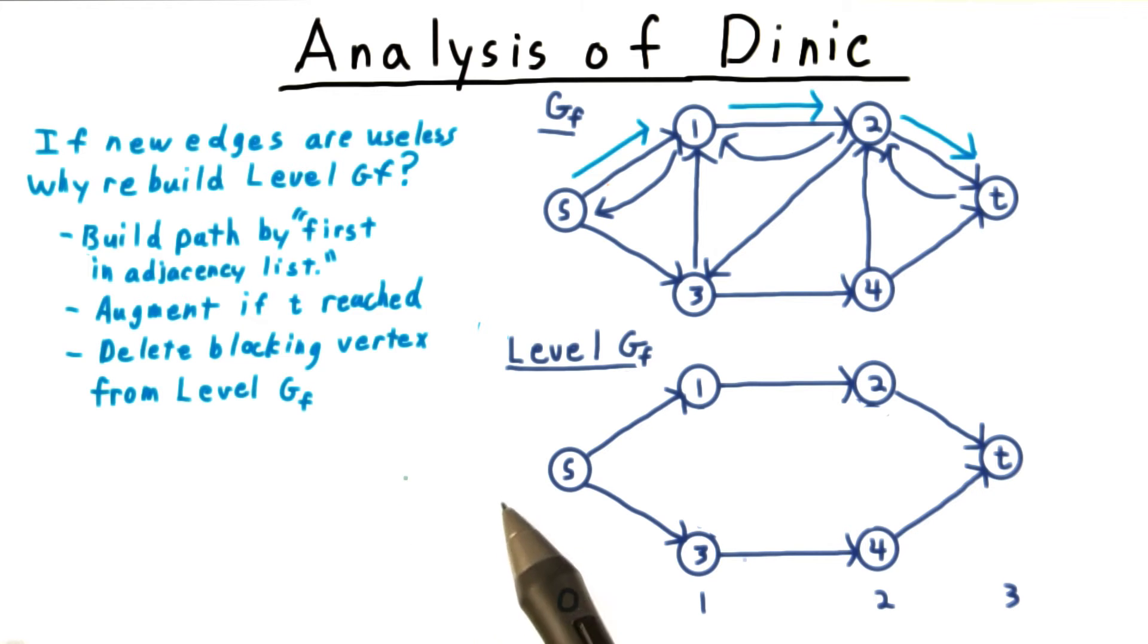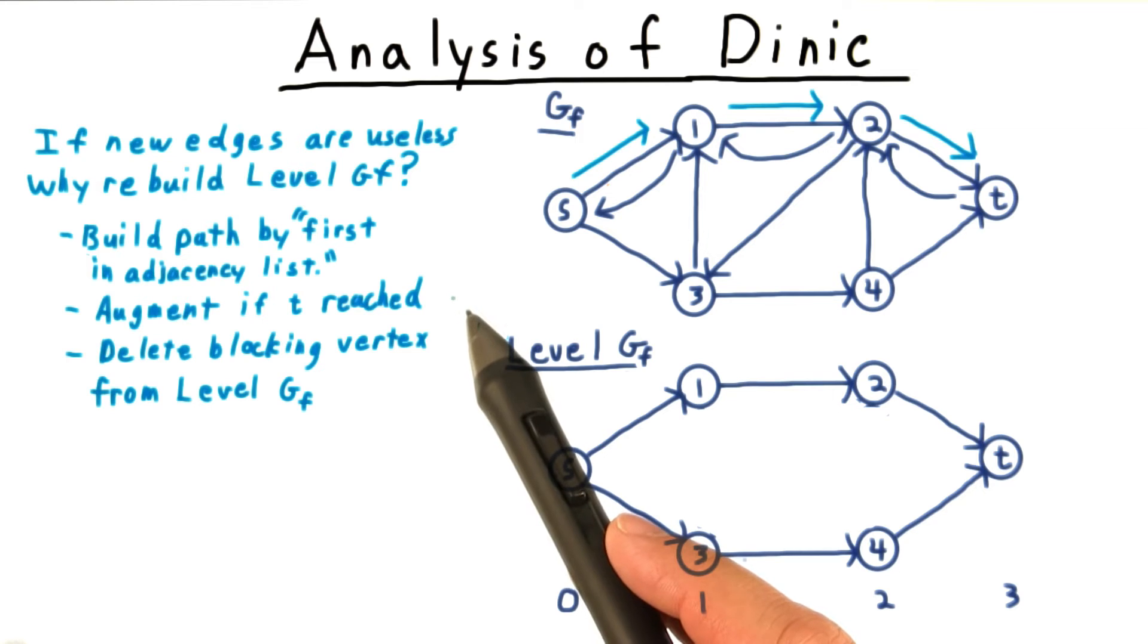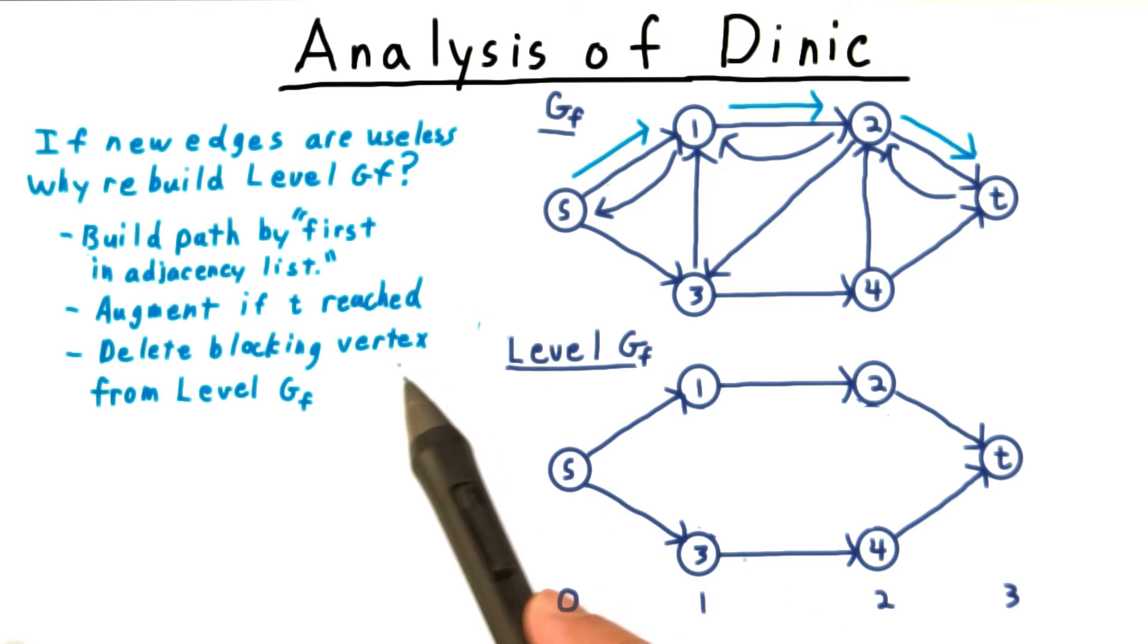If this generates a path to t, then we augment the flow and update the residual capacities. If it doesn't, then we delete the last vertex in the path from the level graph.